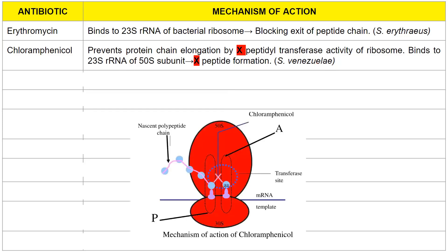Here is a diagrammatic representation of how chloramphenicol works. You need peptidyl transferase to attach the amino acid to the growing polypeptide chain. When chloramphenicol is present, this peptidyl transferase activity is blocked and therefore the polypeptide chain cannot be synthesized.